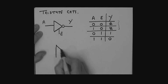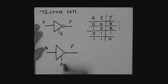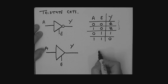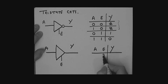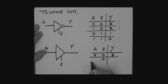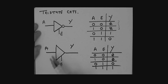The second tri-state driver example has input A, output Y, and an enable — similar but without inversion. Truth table: if the gate is disabled, regardless of A, the output is in a Z state. If the gate is enabled and A is 0, output is 0. If the gate is enabled and A is 1, output is 1. This is a very useful circuit especially when dealing with bus systems. We'll take a look at that after the break.